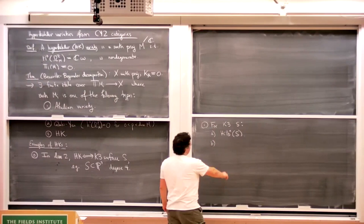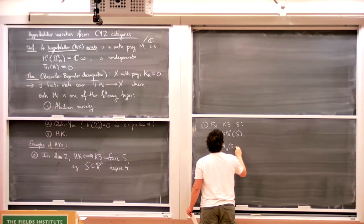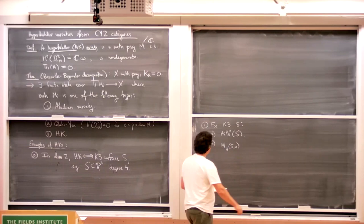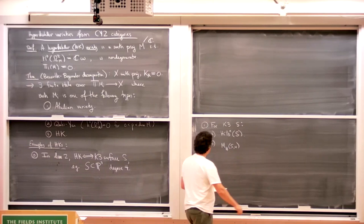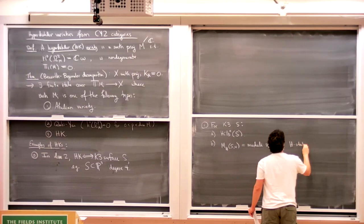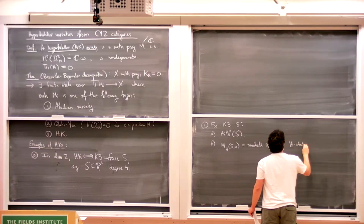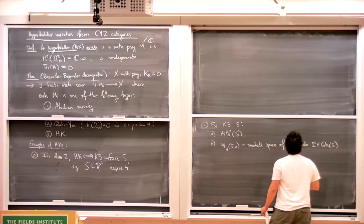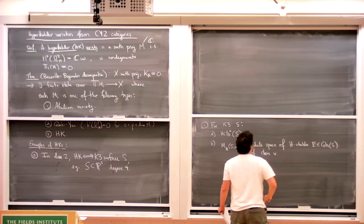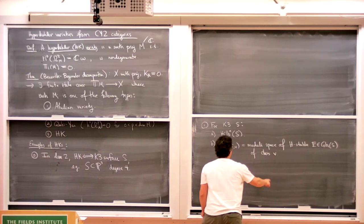A slightly more general version: instead of just taking a Hilbert scheme, you can consider a moduli space M_H(S, v), which is my notation for the moduli space of H-stable coherent sheaves of class v on S. Here v lives in the numerical K-theory of S.